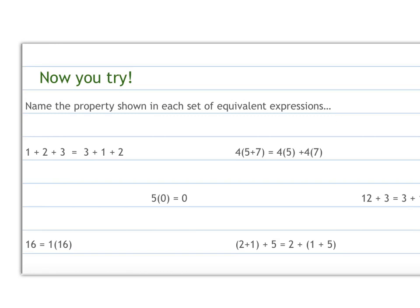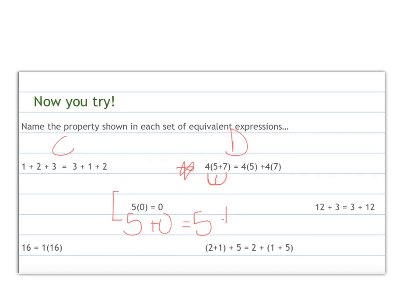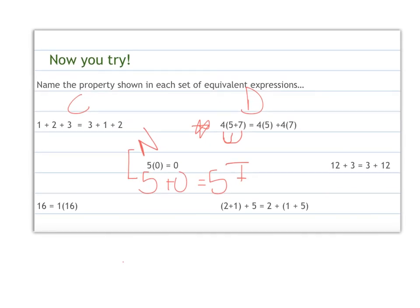Now I would like you to pause me and try and see if you can figure out which property goes with each of these expressions. This one right here is going to be the commutative property because we changed the order of the numbers that we are adding. This one right here is going to be the distributive property because we distributed out our 4 into the 5 and to the 7. This one right here is none of the properties that we talked about. If it was 5 plus 0 equals 5, then it would be the identity property. But otherwise, this would be none that we talked about. 16 equals 1 times 16 would be the identity property of 1.